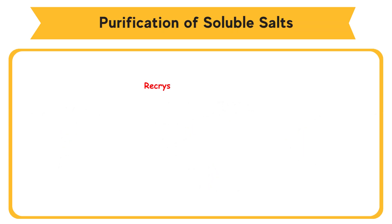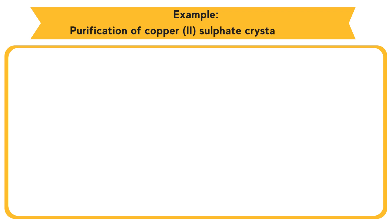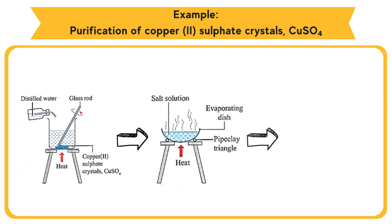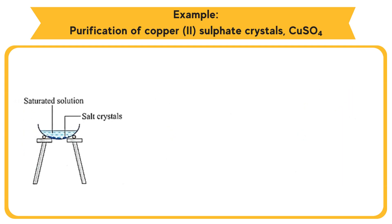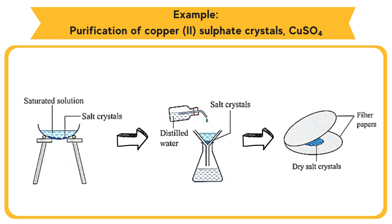Purification of soluble salts by recrystallization method. The soluble salt produced might contain impurities during preparation. Therefore, the soluble salt can be purified by the recrystallization method. Example: Purification of copper(II) sulfate crystals CuSO4. Steps: Add distilled water into copper(II) sulfate crystals while stirring. Heat the solution to speed up the process of dissolving the salt. Filter the hot salt solution to remove insoluble impurities. Pour the filtrate into an evaporating dish and heat until a saturated solution is obtained. Let the saturated solution cool until salt crystals are formed. Filter the contents of the evaporating dish to get the salt crystals. Rinse the crystals with a little amount of distilled water, and dry the crystals by pressing them between two pieces of filter papers.